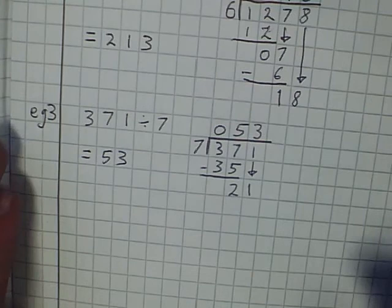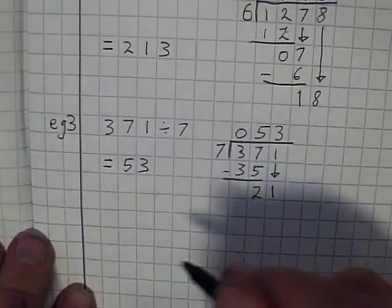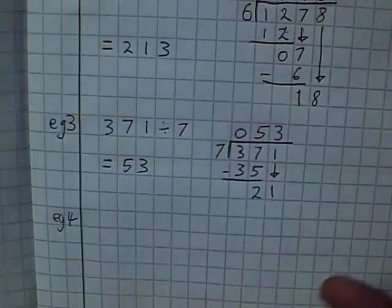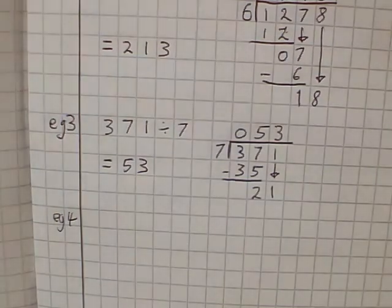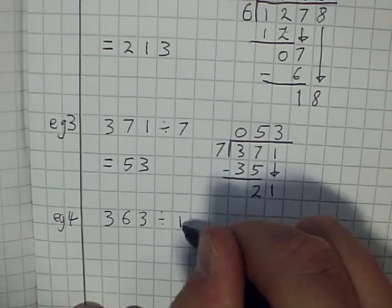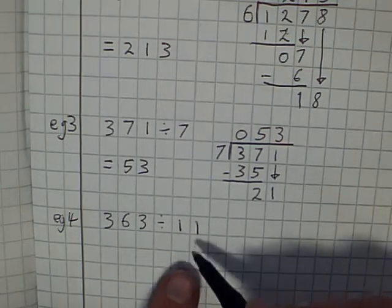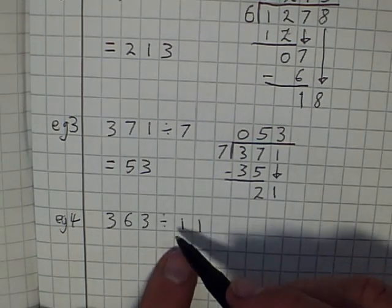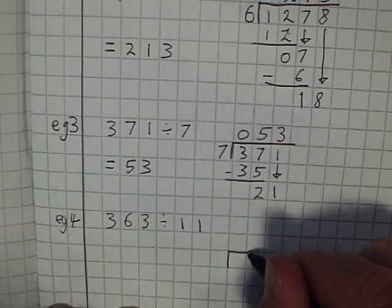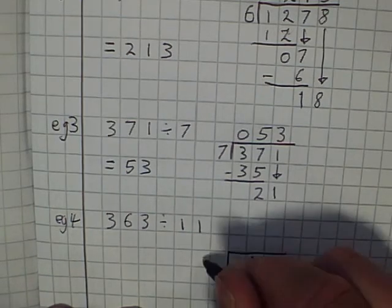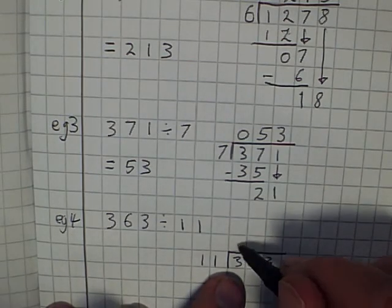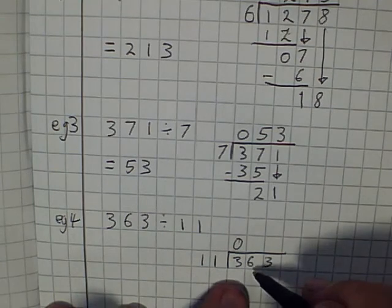One more example. EG4. So if I have, let's take 363 and let's divide it this time by a 2-digit number, 11. I'm doing this to show you it works just as well with 2-digit numbers here as well as 1-digit numbers. So I've got my bus stop and it's 363 which is being divided by 11, divided into 11 groups. How many times does 11 go into 3? It doesn't. How many times does 11 go into 36? It goes in 3 times.